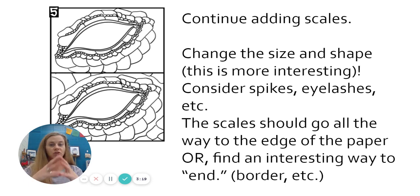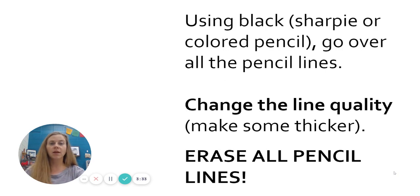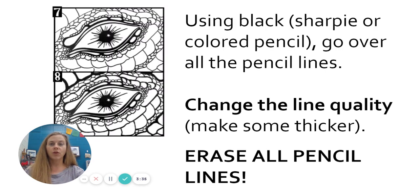The scales should just continue off to the edge of the paper, or if you want to do some kind of border at the edge of the paper to kind of stop it, that's fine. I'll show you my example here in a moment. Then you're going to add some kind of interesting pupil. It can be whatever kind of shape you want, and then you're going to go back over the whole thing and outline everything with a sharpie.